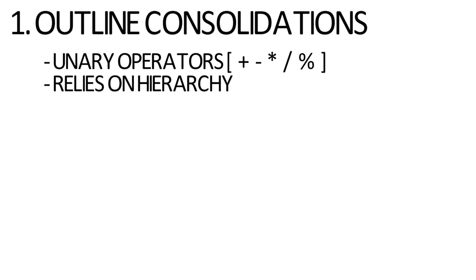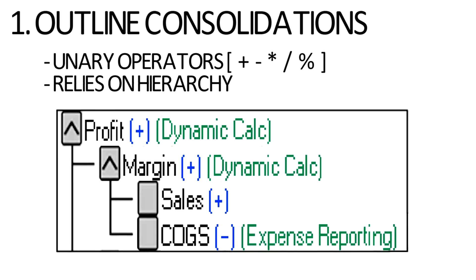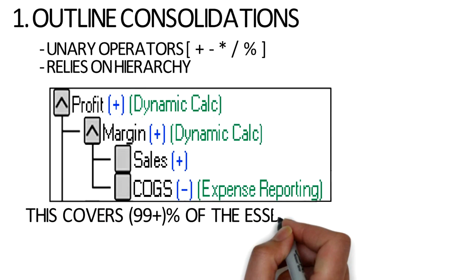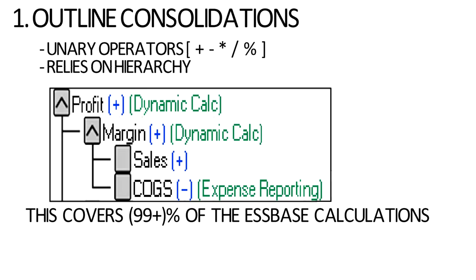When you drag and drop members around within the outline, you're changing how they consolidate. By default, all of them are going to have plus signs next to them. You can switch them to a minus sign and they will subtract up the hierarchy. As you can see here, we have Margin with a plus sign, and rolling into it is Sales with a plus and Cost of Goods Sold with a minus, meaning Margin will equal Sales minus Cost of Goods Sold. This covers 99-plus percent of the calculations you would ever want to do in S-Base.